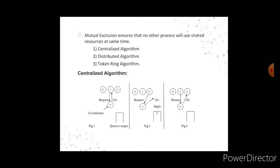In the centralized algorithm, Figure 1 shows four sections numbered 0, 1, 2, and 3. From section 1, a request is sent to section 3, which grants permission and sends a reply to section 1; at this time, the queue Q is empty. In figure 2, section 2 sends a request to section 3, but it is not acceptable, so there is no reply and Q equals 2. In figure 3, section 1 releases its resource, a reply is sent to section 2, and Q becomes empty again.